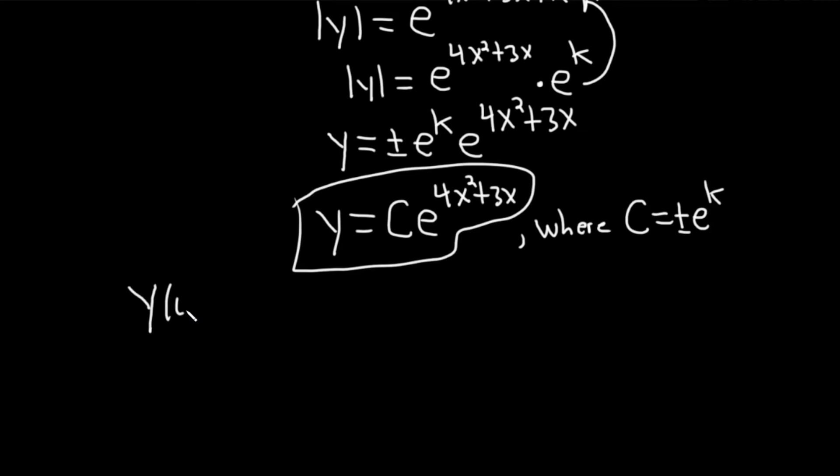So we're going to use y of 0 equals 5. That was given at the outset to find c. So let's use this. When we use this, basically we put a 5 where the y is. And we put a 0 where the x is. So we get c e to the 4 times 0 squared plus 3 times 0. So 5 is equal to c e to the 0. e to the 0 is 1. So 5 is equal to c times 1.